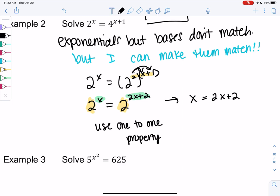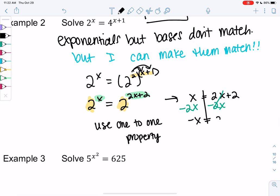So I'm going to go ahead and solve. It's nice and linear now. So we'll subtract 2x. So I get negative x equals 2. Divide by negative 1. So x is negative 2.